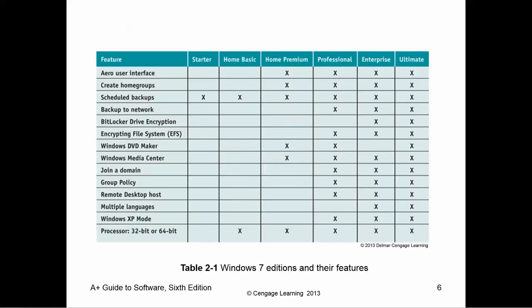Here is a quick overview of what features each version has. Notice Enterprise versus Ultimate — the only difference is the DVD Maker. For some people that's a huge thing; for others, it's really not, but it's important to note.